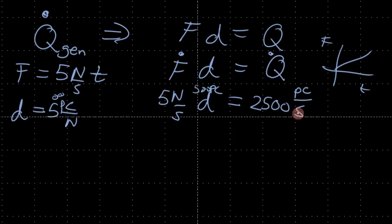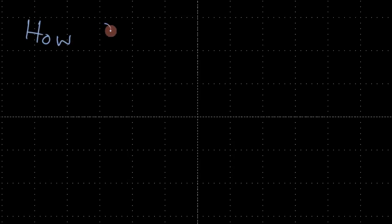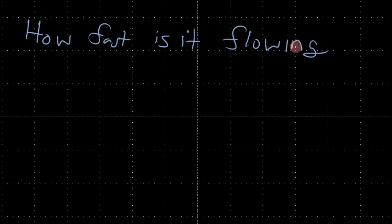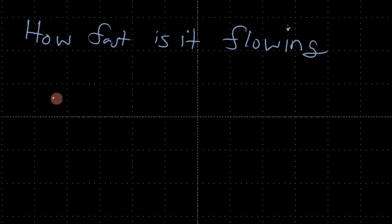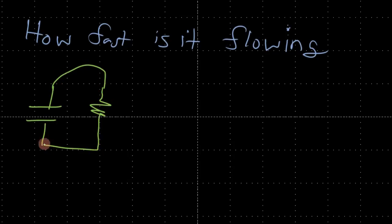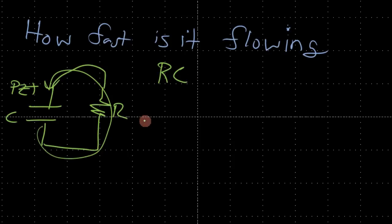This is the rate of generation of charge, not the current. What we also need to consider is how fast the current is actually flowing. If we look at the piezo as essentially a capacitor at DC conditions, connected to the external resistor, current flows around according to the RC time constant.